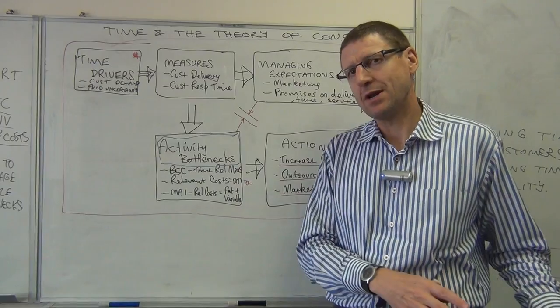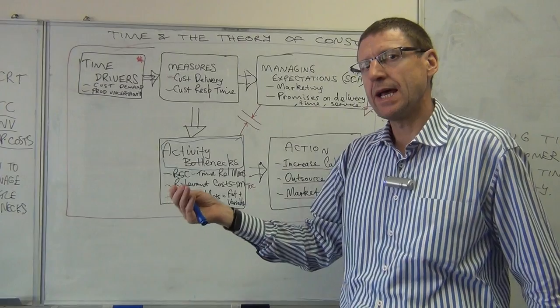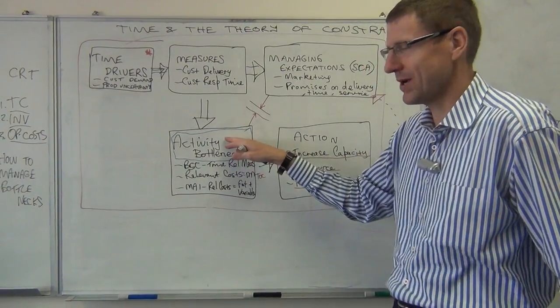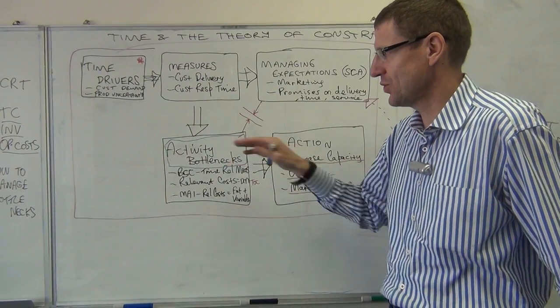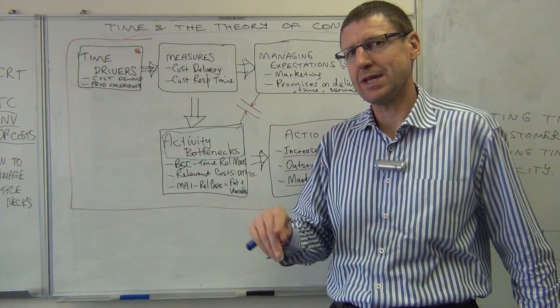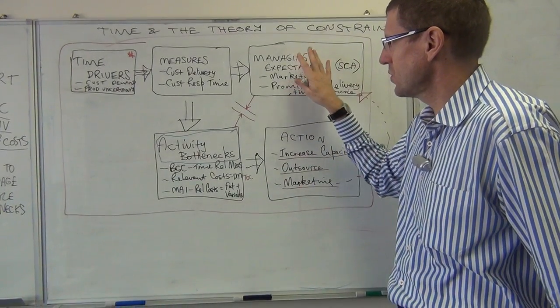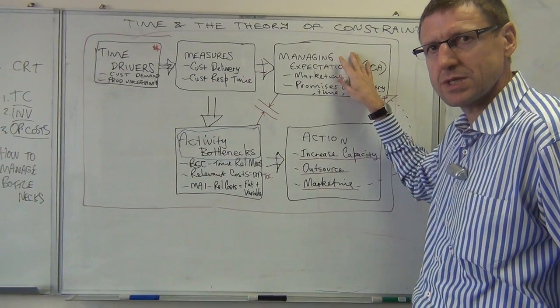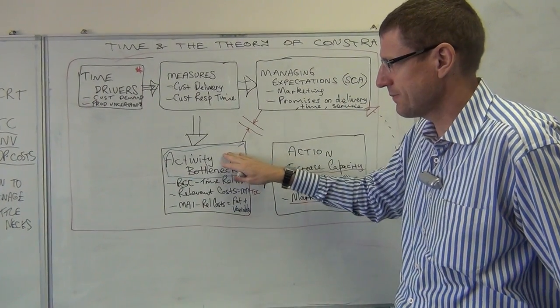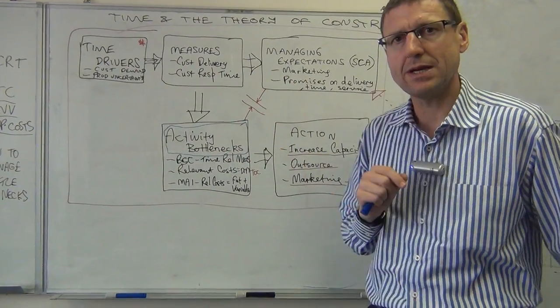But now you've made that promise in the market, that value proposition, now you have to deliver. And so the way you market and manage expectations of customers can directly put pressure on your operations. And you better be sure that your operations are ready to actually match the expectations that you have been promoting in the marketplace. So we do talk about management expectations, which is the marketing side of the business and the operations, activity bottlenecks, they are quite related in many ways.